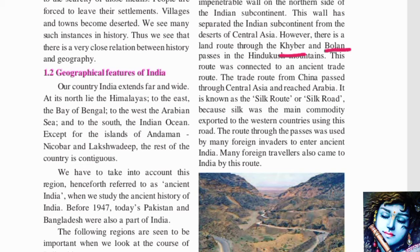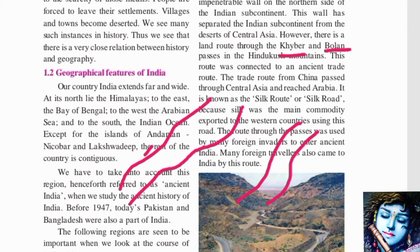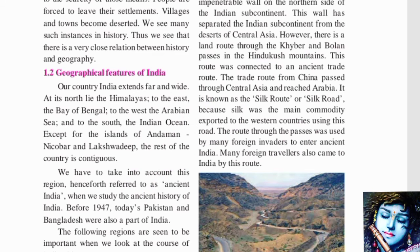Khyber Pass and Bolan Pass — these two routes are made through the Hindu Kush mountains. These are ancient routes connected to an ancient trade route called the Silk Route. The trade route from China passed through Central Asia and reached Arabia, and it is called the Silk Route.